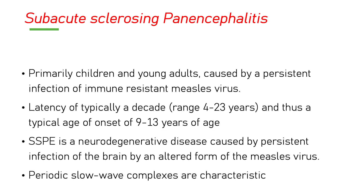Subacute sclerosing pan encephalitis — a brief review. It is predominantly a white matter disease. It can be asymmetrical or symmetrical, involving the periventricular or subcortical region. Rarely it can involve the grey matter, though sometimes it does. It may enhance rarely — usually it does not.